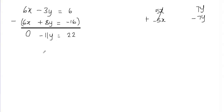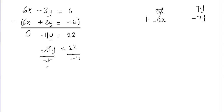This is basically a one-step equation. We have negative 11y equals 22. To find the value of y, divide both sides by negative 11. The negative 11s cancel, giving us y equals 22 divided by negative 11, which equals negative 2.